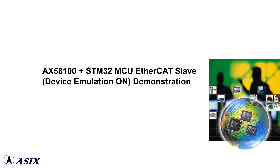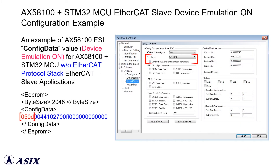The last demonstration will show you how to enable EtherCAT device emulation mode for AX58100 and third-party MCU without EtherCAT protocol stack applications, in order to handle EtherCAT state machine events correctly. This is an example of an AX58100 ESI file configuration for this case. Designers can also check the device emulation and PDI type configuration on the TwinCAT tool.